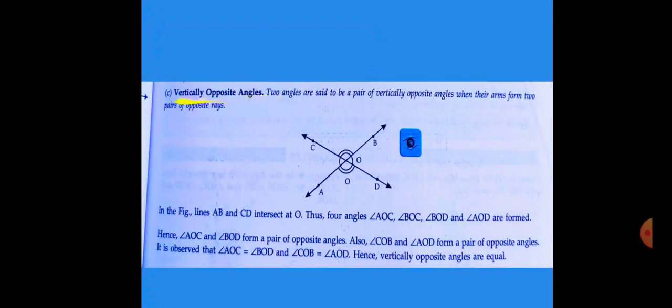Vertically opposite angles: Two angles are set to be a pair of vertically opposite angles when their arms form two pairs of opposite rays.